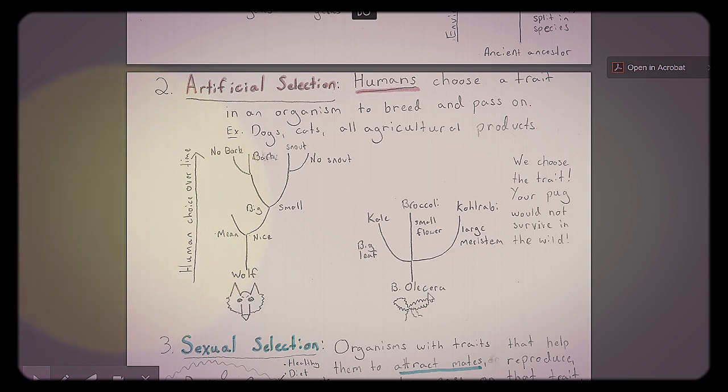Same thing here. Here's another example. This Brassica oleracea plant, we developed many plants from it. We bred in ones with big leaves, and that gave us kale. We bred ones that make small flowers that don't necessarily bloom all the time, and that's broccoli. Kohlrabi has a large meristem. Kohlrabi is a common more European culture. It's like a food, but it's like a big meristem, like a bottom stem, basically. So we choose the trait, so it's a little bit different.